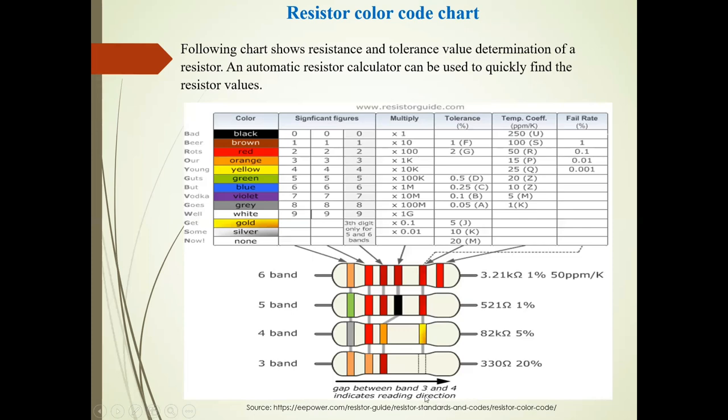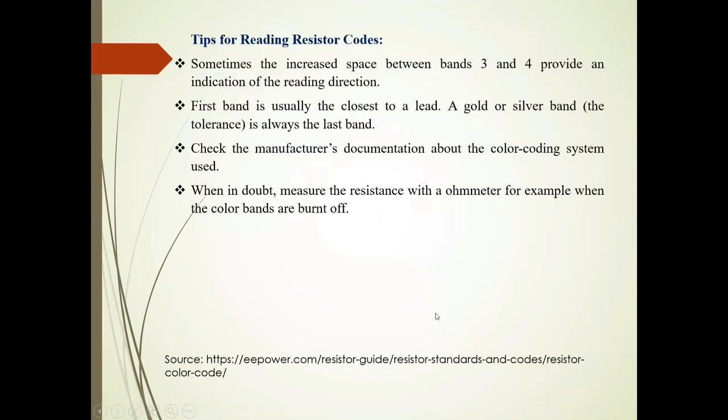So gap between band 3 and 4 indicates reading direction. Now friends, tips for reading resistor codes. Sometimes, increased space between band 3 and 4 provide an indication of reading direction. Now first band is usually closest to lead. Gold or silver band is always the last band.